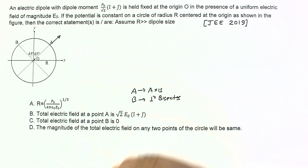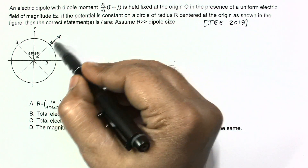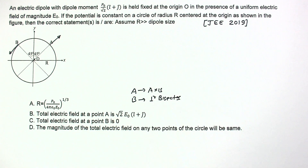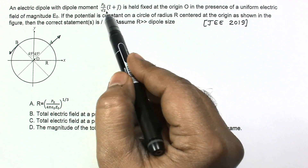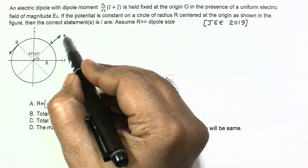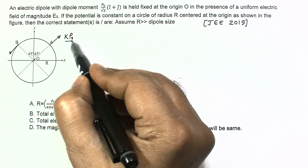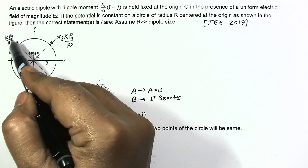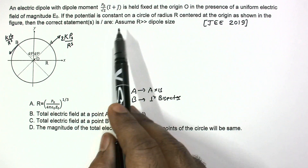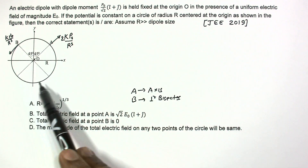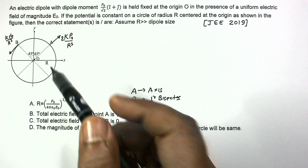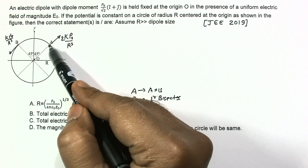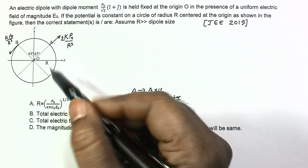The electric field due to the dipole is given with dipole moment magnitude p₀. The field due to the dipole is Kp₀ divided by R³. Now, the net electric field should be perpendicular to the tangent at every point on this circle, so at each point on the circle the net electric field should be along the radial direction — perpendicular to the circle at that point.